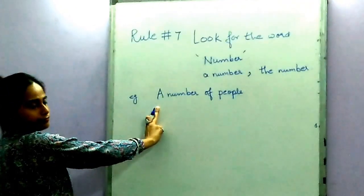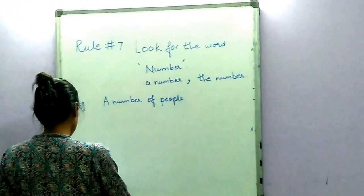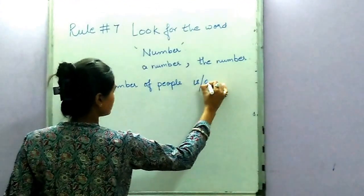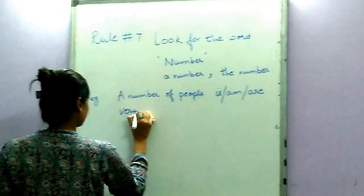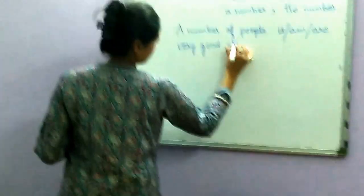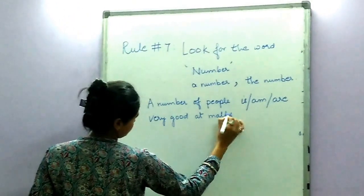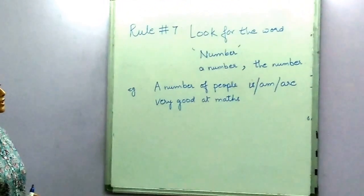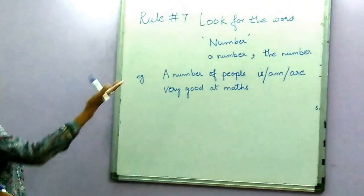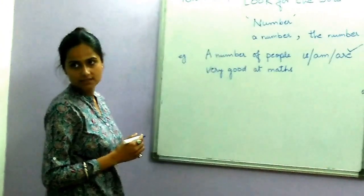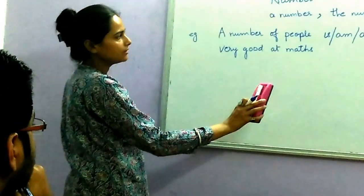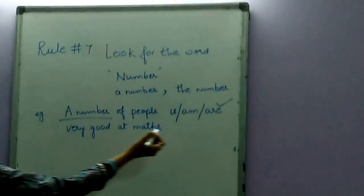A number of people are very good at maths. So a number of people - number - a number of people are very good at maths. So we have seen here a number, so our verb automatically...